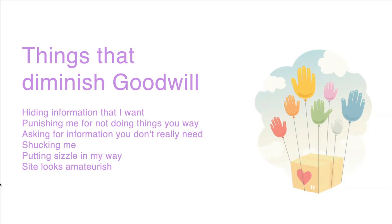Don't punish users for not doing things your way. If the developer hasn't written the code and therefore the user has to take two steps to complete a booking, that's not a good idea — we are punishing the user for our own backlog. The user wants a one-click step. Also, don't ask for information you don't really need — if you ask for name, mother's name, credit card number, security code all at once, the user will run away.